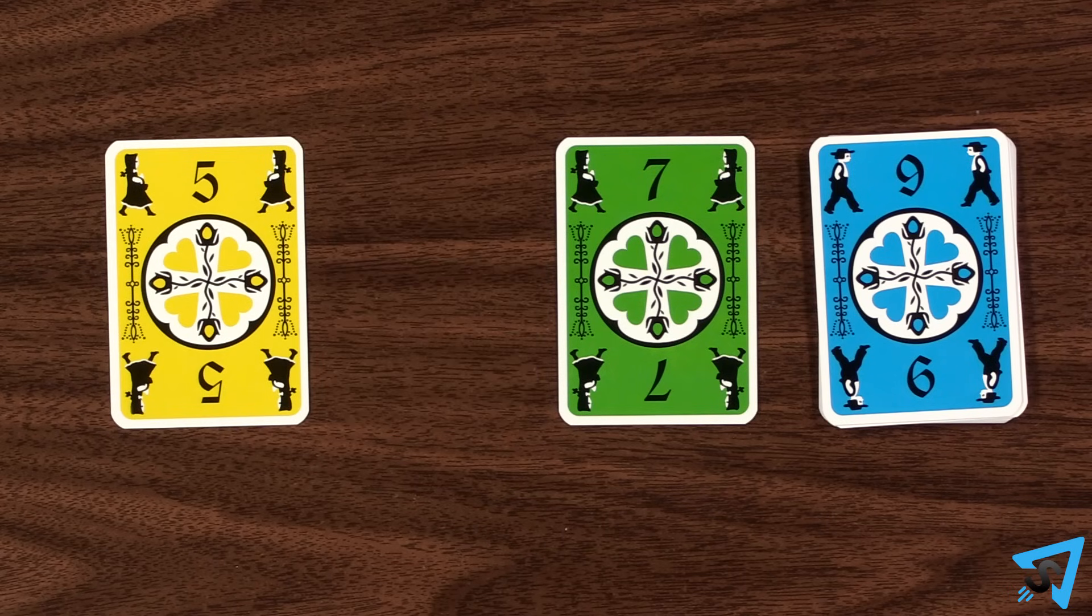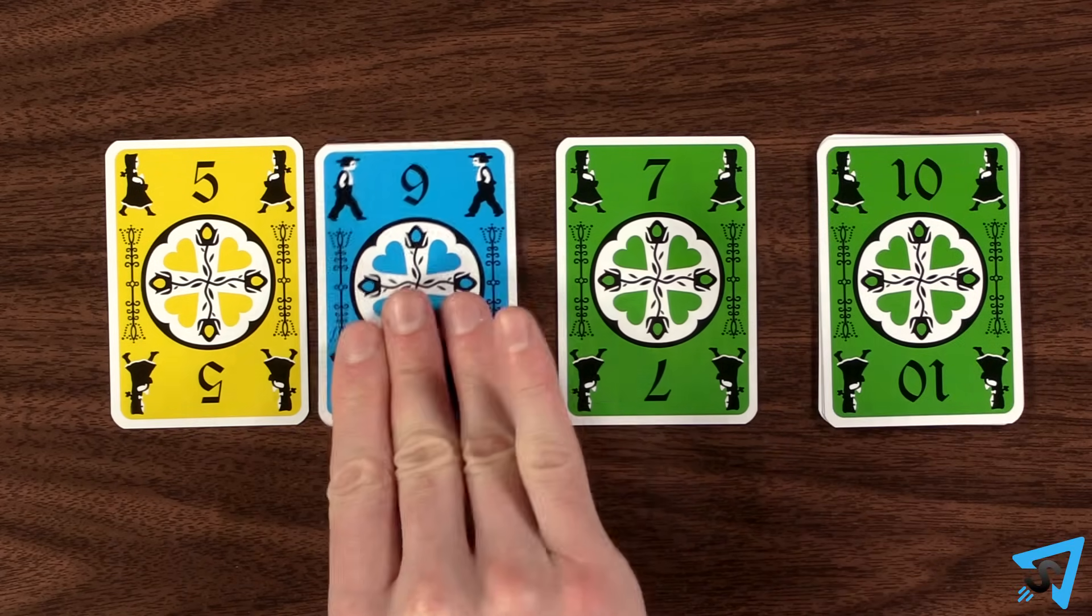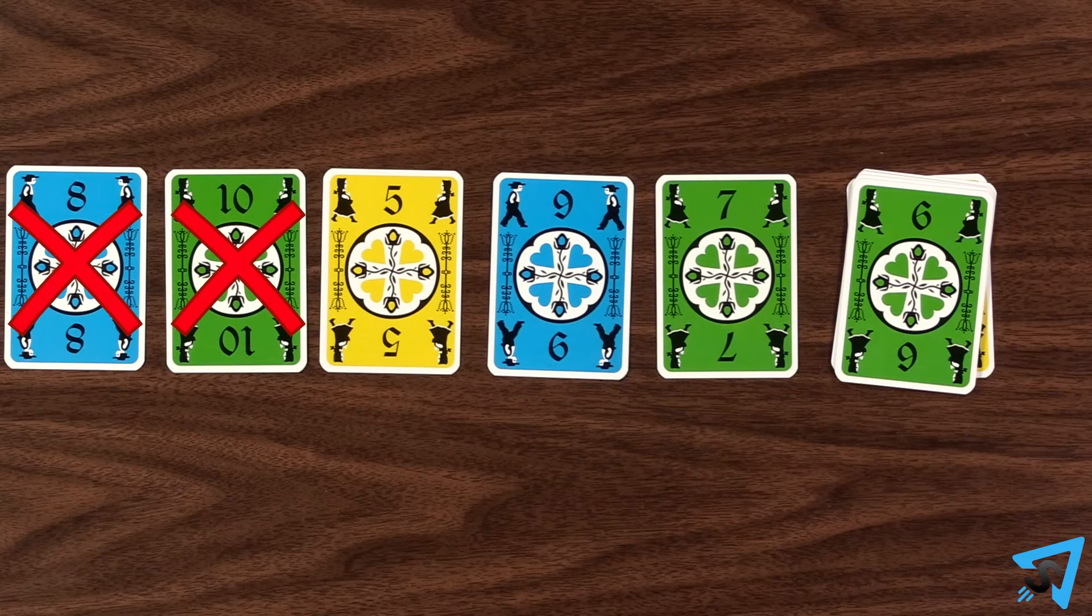If a post pile is empty, you may move the top card from your blitz deck onto it. You may not have more than three post piles.